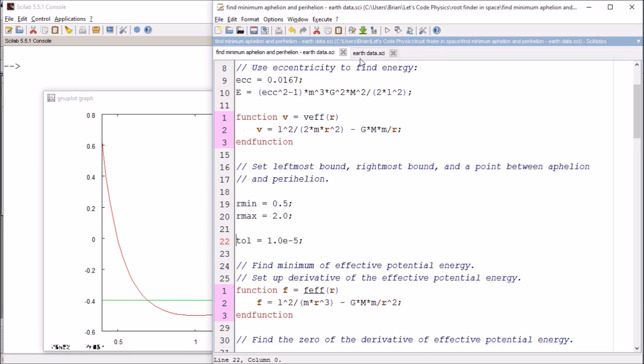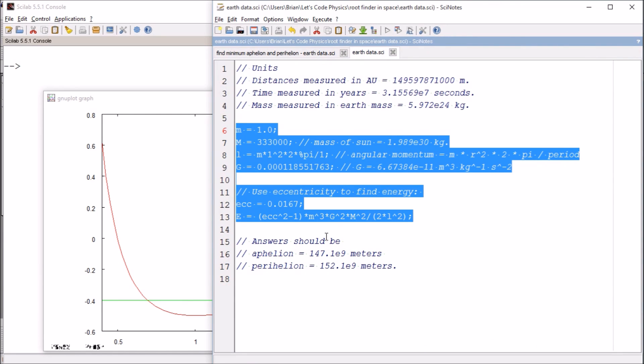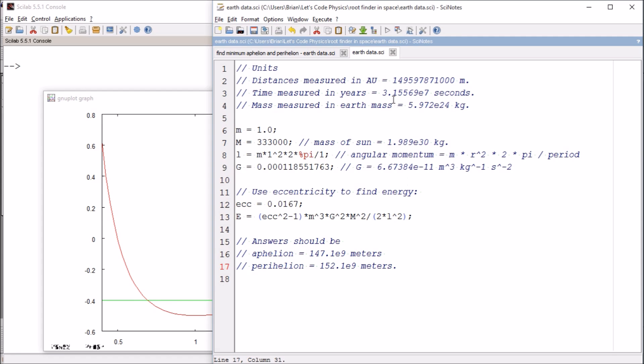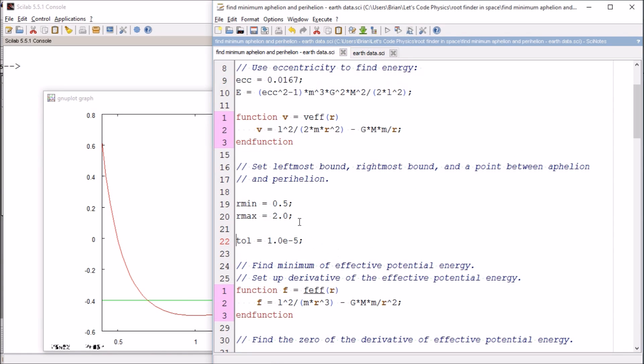So the earth answers should be an aphelion of 147 times 10 to the 9 meters and a perihelion of 152 times 10 to the 9 meters. Now those are in meters, not in AUs. So what we're going to do at the end is convert those over. So I'll come back and get this number in just a minute. For right now, what I want to do is I want to think about my rmin and rmax.